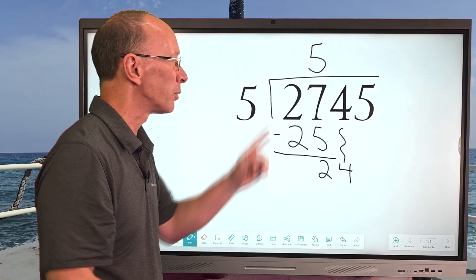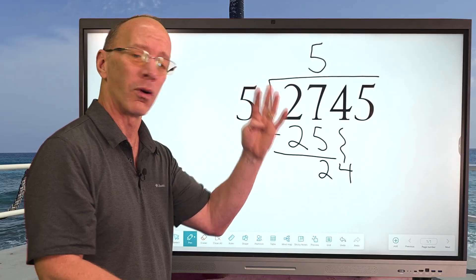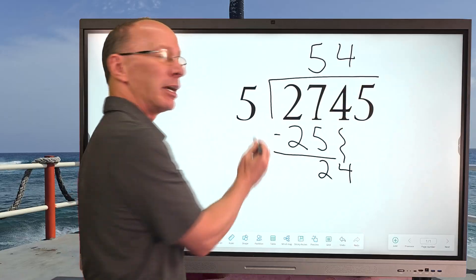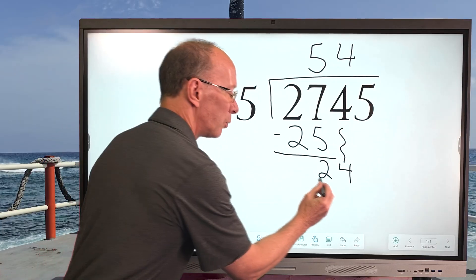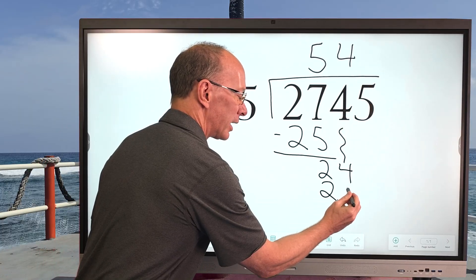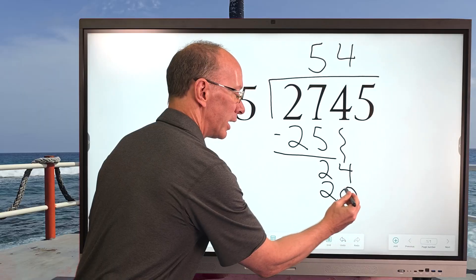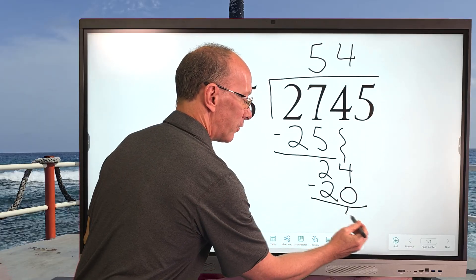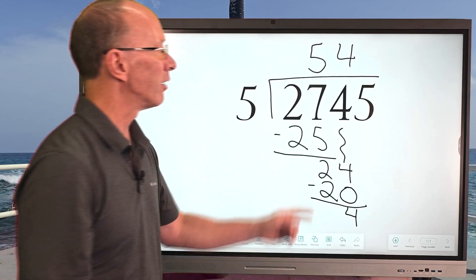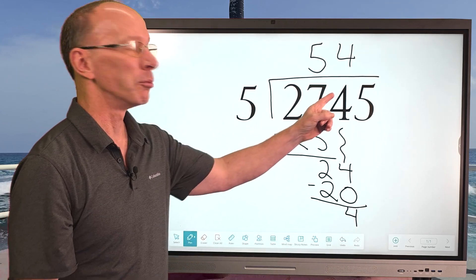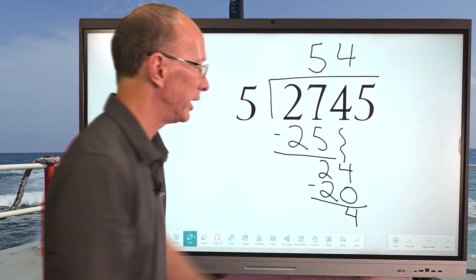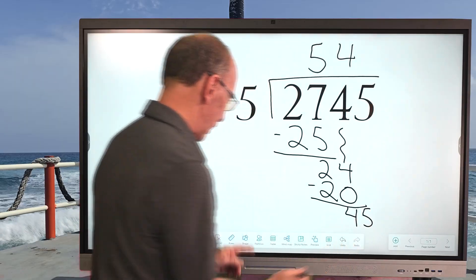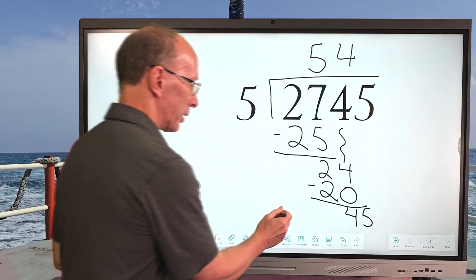If I did 5 times 5, that's 25 and that's too big, so we need to make it a little smaller. We're going to go with 4. So 4 times 5 equals 20. Again, we're going to subtract, and then we have 4 right here. Now I'm going to go ahead and bring down the next number, which will be a 5.